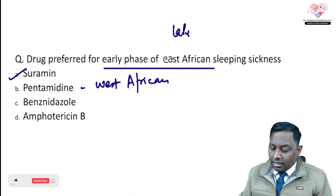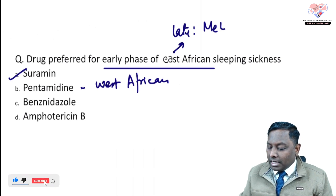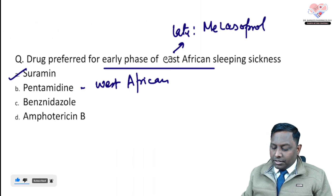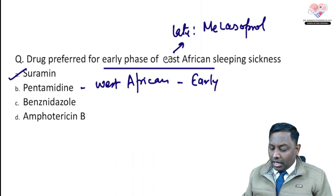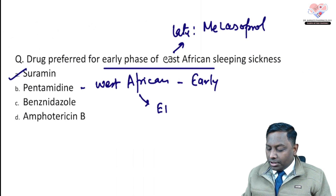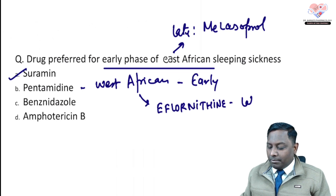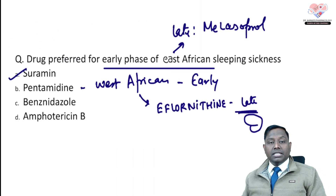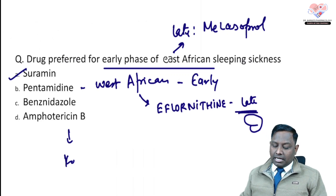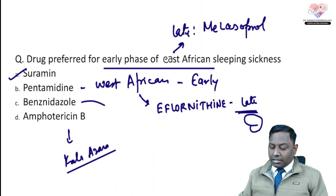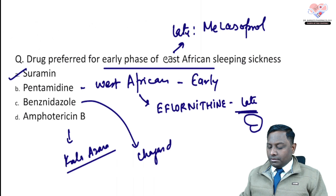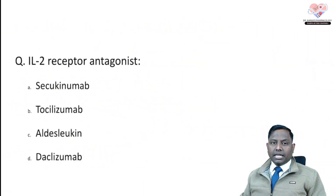For East African sleeping sickness, the late-stage drug is melarsoprol. For West African sleeping sickness, the early stage uses pentamidine and the late stage uses eflornithine. If CNS involvement is mentioned, the same principle applies. Amphotericin B is the drug of choice for kala-azar. Benznidazole can be utilized for Chagas disease, which is also called South American sleeping sickness.